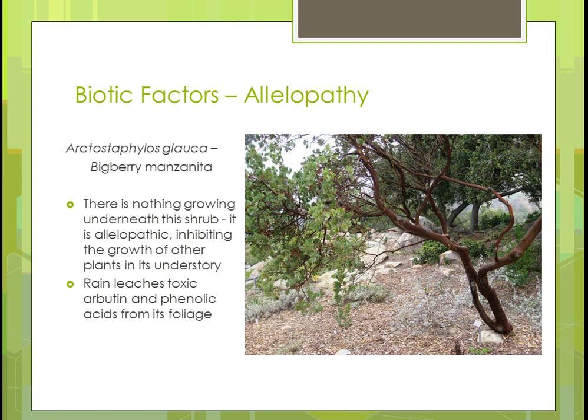Allelopathy. Here's an example of Bigberry manzanita. If you remember allelopathy from Part 1 of this unit, it's an example where a substance is given off by the organism — in this case, that Bigberry manzanita — and it gives something off so that nothing is going to grow underneath it. That bare area underneath the shrub is called allelopathy.